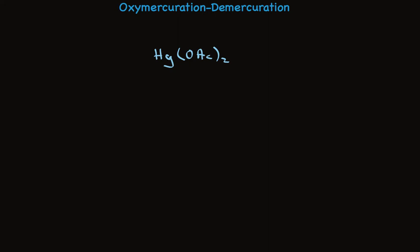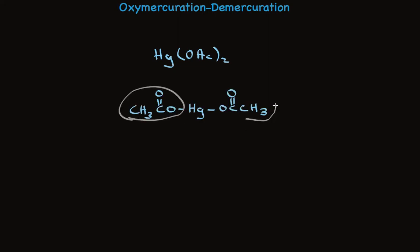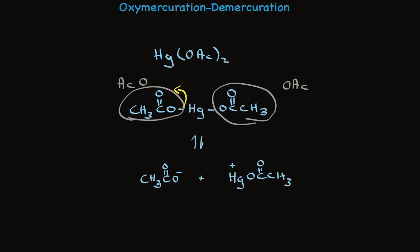Mercuric acetate is often written like this. OAc stands for acetate, but it looks like this when we write out all the atoms. These are both acetate groups, OAc, and they're leaving groups. This oxygen-mercury bond is easily broken, and acetate leaves with a pair of electrons to put a positive charge on mercury. That makes the mercury an electrophile — it needs a pair of electrons.